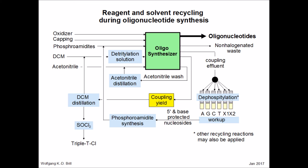The dichloromethane of the detritylation solution will be recycled and separated from the tritylated products. The tritylated products will be converted with thionyl chloride to give triple-T chloride if triple-T is used. The acetonitrile used in washes and during the coupling reaction is redistilled after use and can be reused in the synthesis. The nucleosides are isolated separately, each in a specific port, where the recycling reactions for nucleosides may occur.